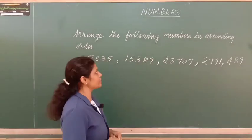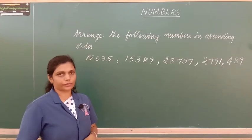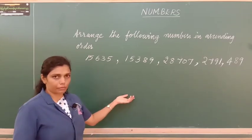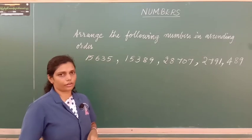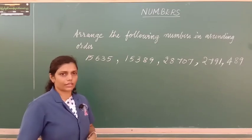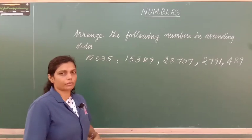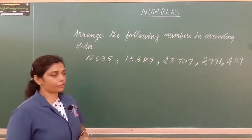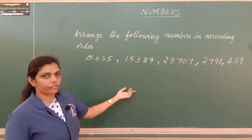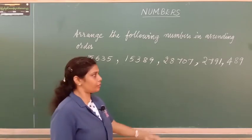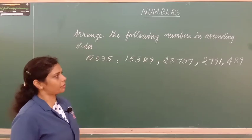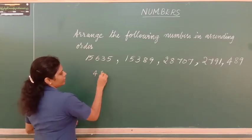The next problem is: arrange the following numbers in ascending order. Ascending order means arranging numbers from small to big. We identify the smallest number by taking the one with the fewest digits. The last number has only 3 digits — 489 — so that is the smallest and we write it first.